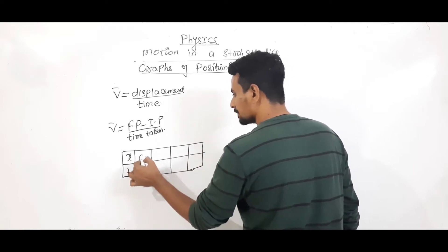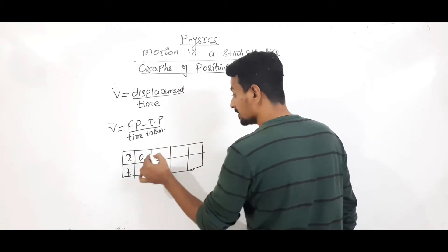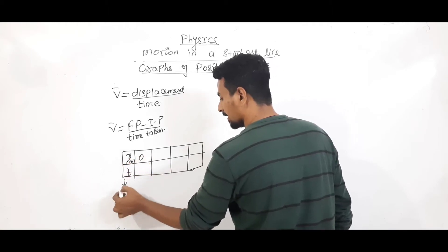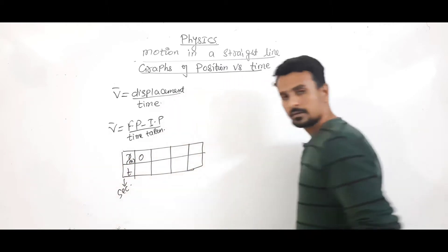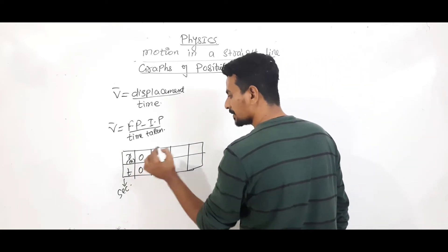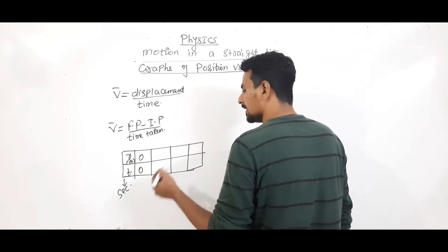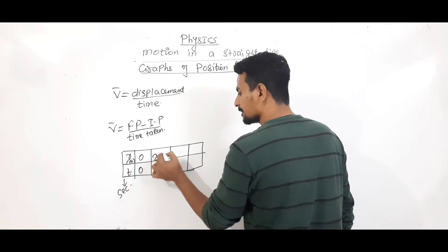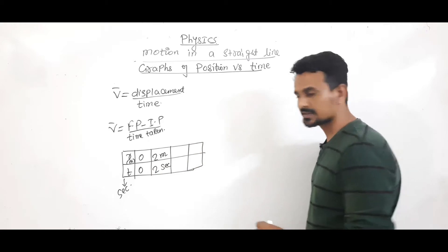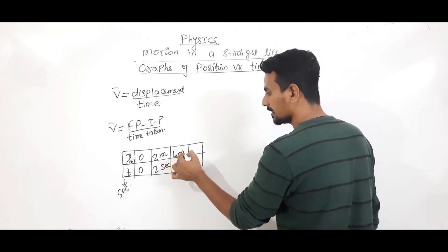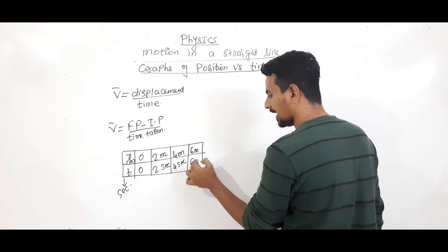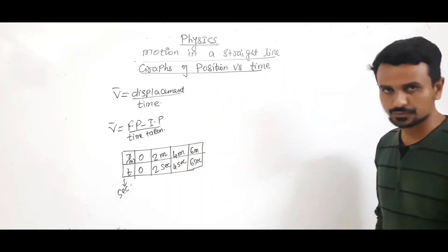Let us say the object is at 0 meter — position is in meter, time is in second. The object starts from origin at t equals 0. Let us say that it travels a distance of 2 meters in every 2 seconds: 2 meters in 2 seconds, 4 meters in 4 seconds, 6 meters in 6 seconds, and so on.